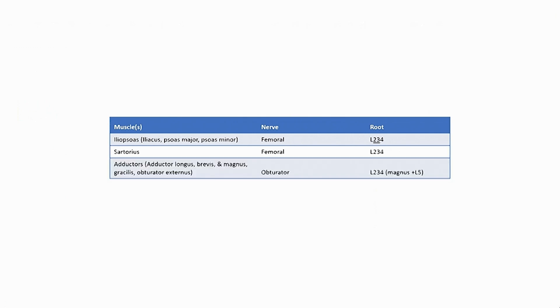The thigh adductor longus, brevis, and magnus, as well as the gracilis, and the obturator externus. These are all innervated by the obturator nerve, primarily L234. The adductor magnus can have some L5 innervation.